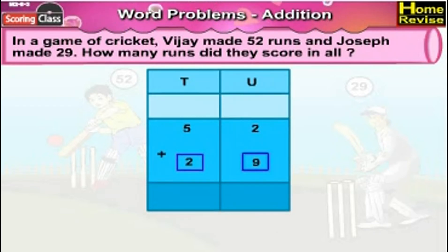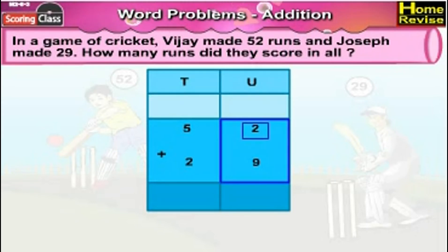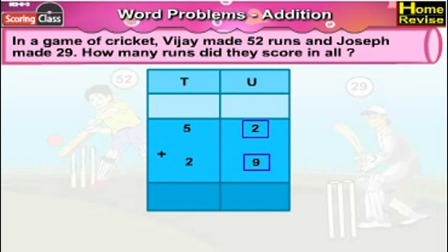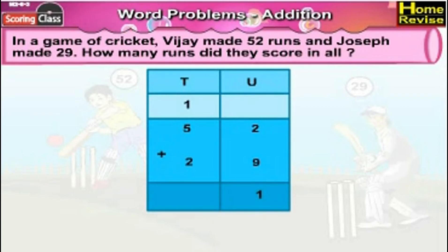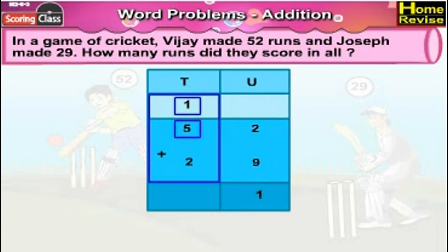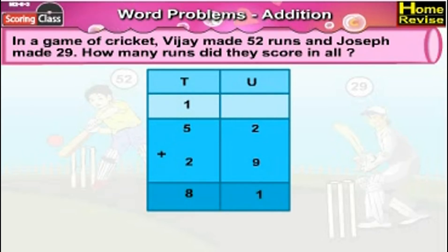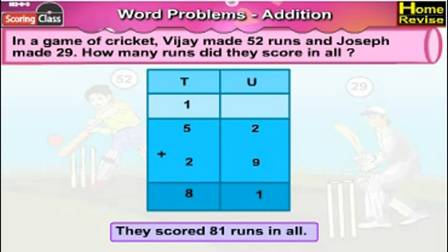Let us arrange them in order. Under units we have 2 units plus 9 units, and under tens we have 5 tens plus 2 tens. 2 units plus 9 units is 11 units — write 1 in the units place and carry forward 1 in the tens place. Under tens we have 1 ten plus 5 tens plus 2 tens, that is 8 tens. So it is 8 tens plus 1 unit, which means 52 runs plus 29 runs is 81 runs. They scored 81 runs in all.